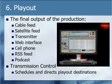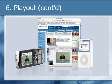Play out is the final output of the production. Options include a cable feed, satellite feed, transmitter, web interface, cell phone, RSS feed, or podcast. Before reaching those destinations, the signal goes to transmission control, which schedules and directs play out destinations, inserts commercial breaks, adds corner labeling, station identification, and similar elements.